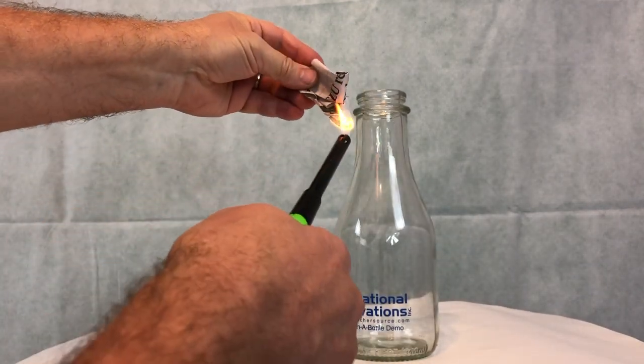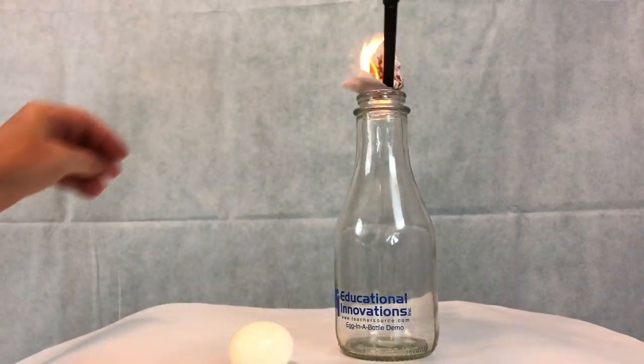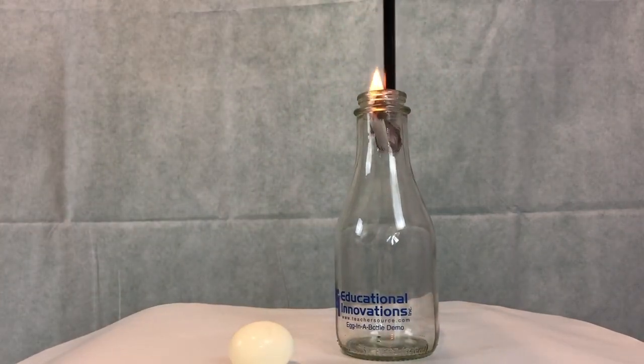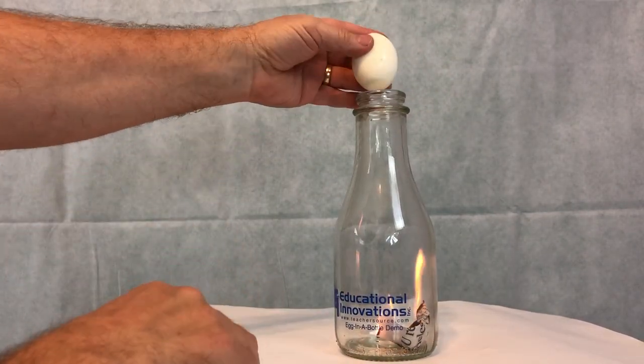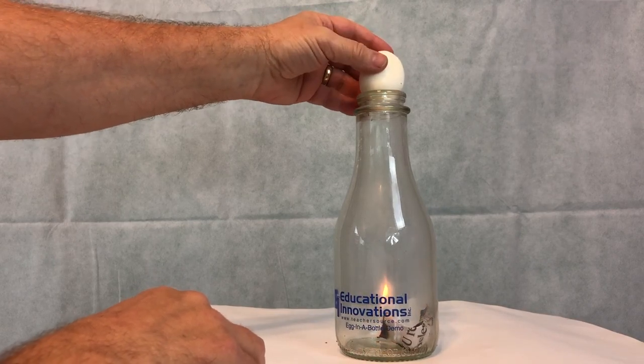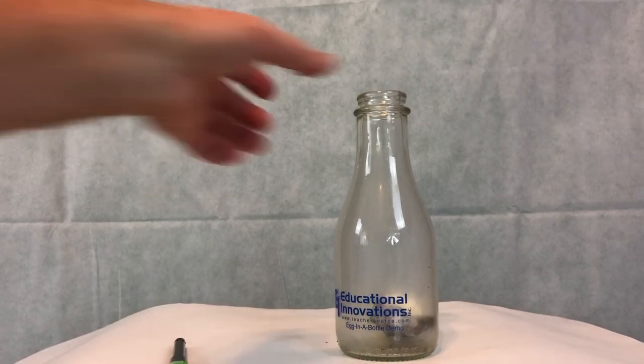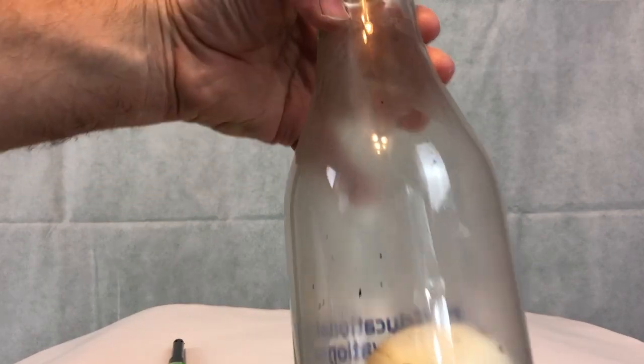And once you get the piece of paper on fire, you're going to put it inside the bottle so it goes all the way in. And then you're going to take your hard-boiled egg and put it on top so it stands up straight. You can see it kind of falls. And there it goes. It goes right in, right away.